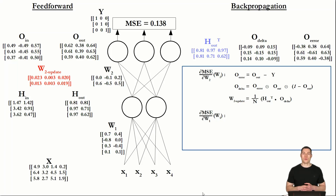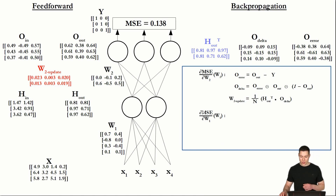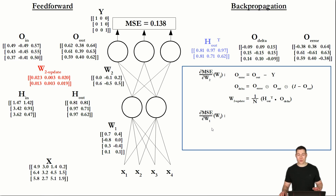Welcome to part 12 of the Basics of Deep Learning series. In the previous video, we left off at the point where we wanted to determine the partial derivative of the mean squared error with respect to weight matrix 1, and this is what we're going to do now.